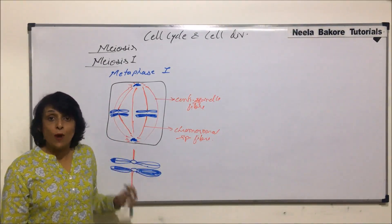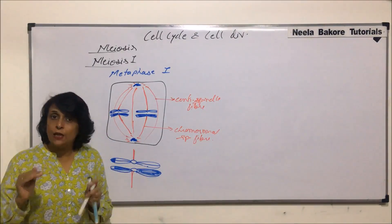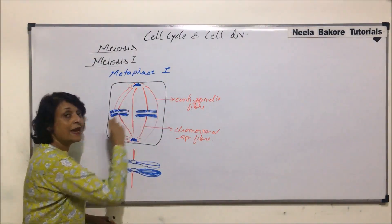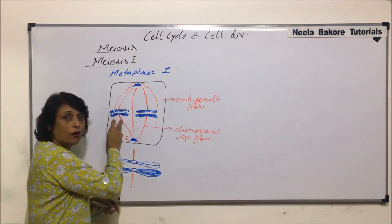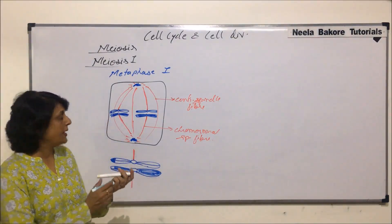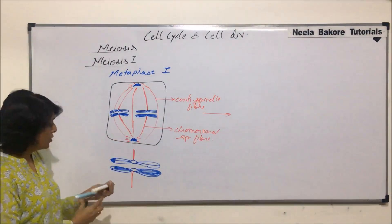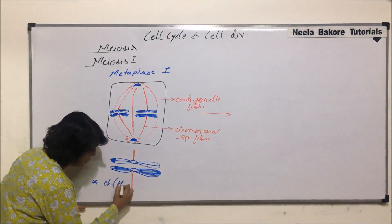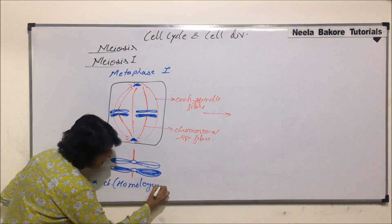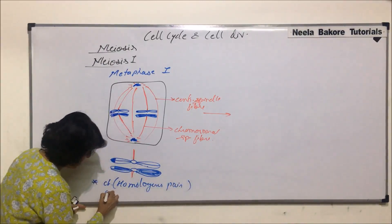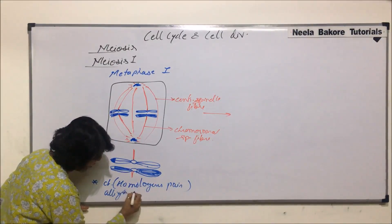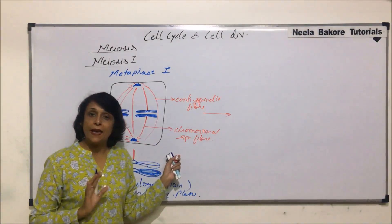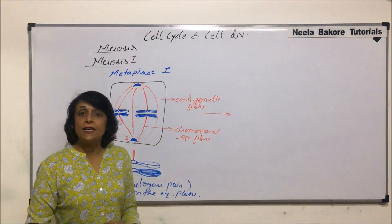What has happened in metaphase 1? In normal metaphase, chromosomes align on the equatorial plane. But in metaphase 1, it is the homologous pair which has aligned on the equatorial plane, not single chromosomes. Now this cell enters the next stage. The main change in metaphase 1 is that homologous pairs align on the equatorial plane. The cell now enters anaphase 1.